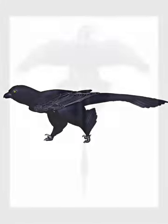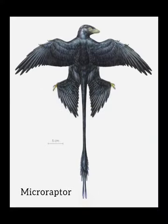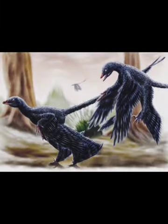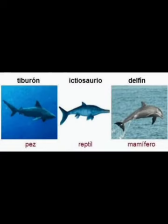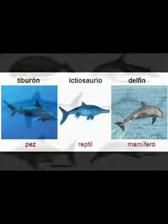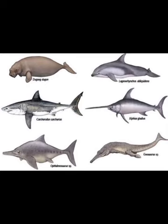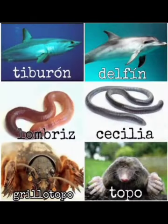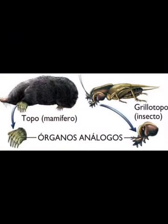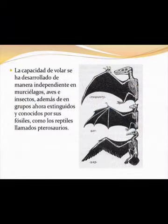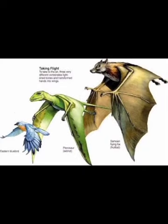Tendríamos que examinarlos muy, pero muy de cerca para saber de qué especies se trata. Ahora pasaremos a hablar de las homoplasias convergentes, convergencias o analogías. Este fenómeno ocurre cuando dos especies desarrollan o adquieren rasgos parecidos de manera independiente, siendo de clases diferentes. Un ejemplo de ello es el murciélago, que desarrolló la capacidad del vuelo y aleteo convergentemente a los pájaros, aun siendo un mamífero.